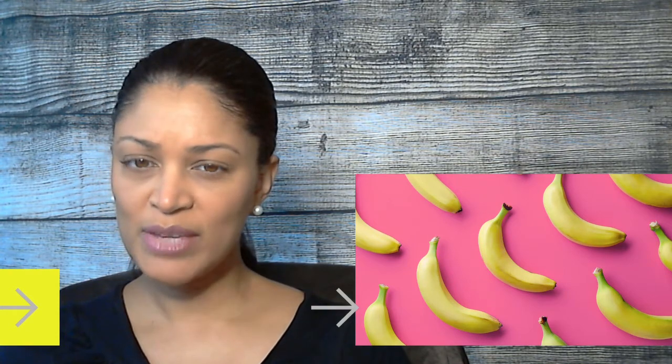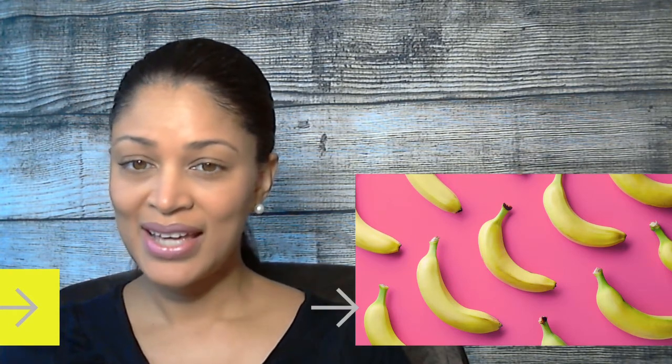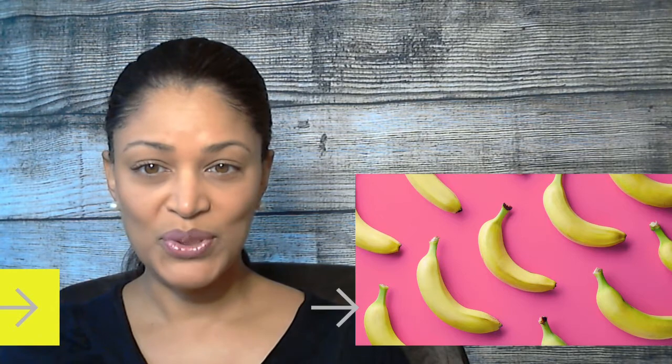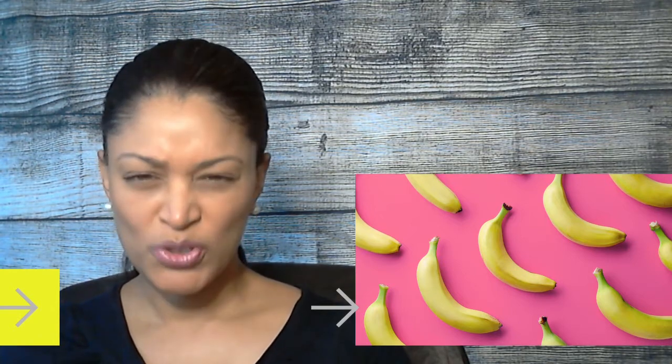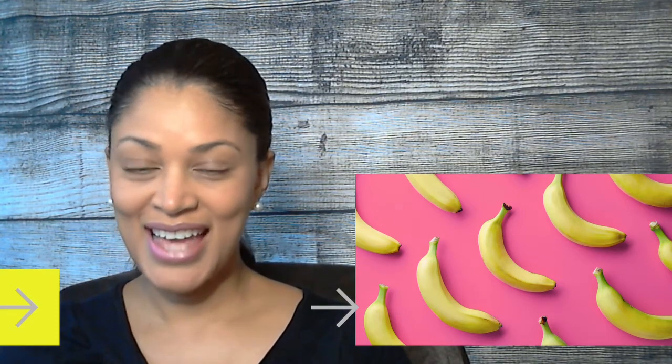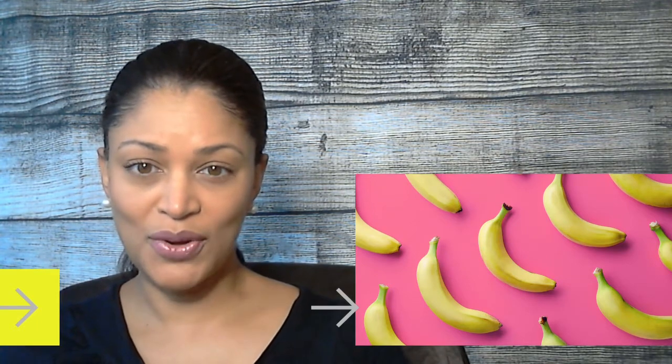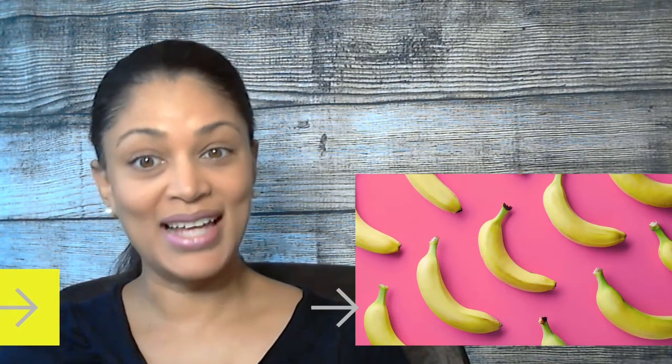It has about 26 grams of carbs in one banana. If you saw my video on pineapples, I think I said pineapples had about 21, 22 grams of carbs. So a pineapple is much sweeter and yet has a little less amount of carbs in it compared to a banana.